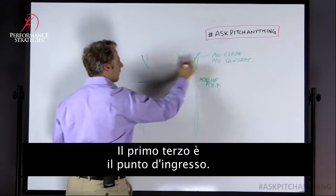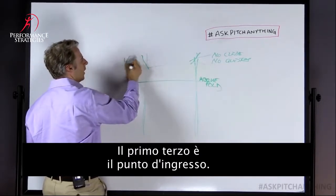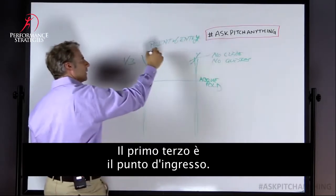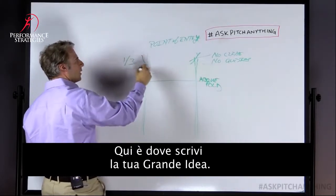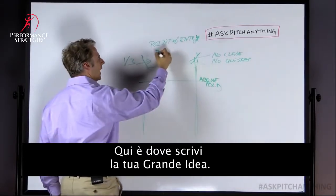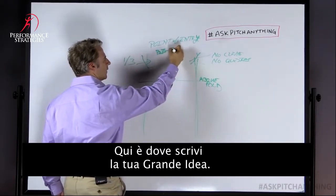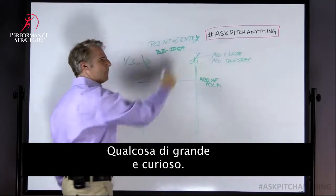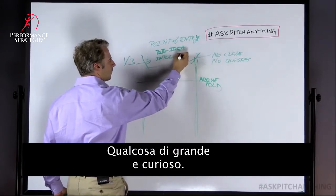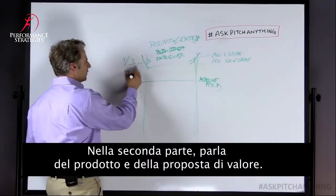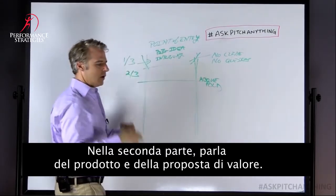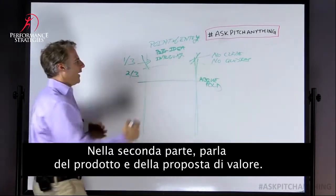For the first one-third above the fold, I would call this the point of entry. What's the point of entry? That is your big idea — something big and intriguing. That gives you two-thirds to talk about your product and value proposition.